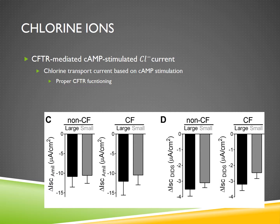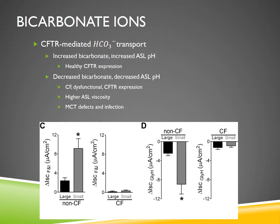What they noted was that CFTR-mediated cyclic AMP-stimulated chlorine currents were observed in both large and small epithelial cells with proper CFTR functioning. In non-cystic fibrosis pigs there was more expression of chlorine ion transport, but bicarbonate ion transport was significantly different between cystic fibrosis, non-cystic fibrosis, and between large and small airway epithelial cells.